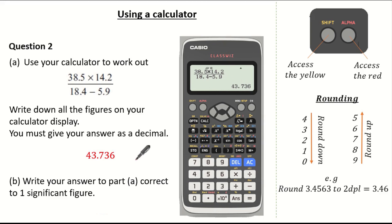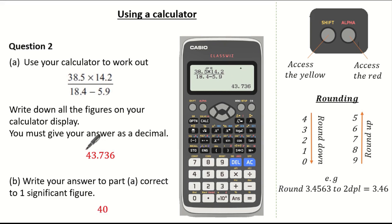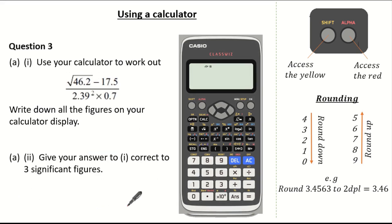Now part B wants us to round our answer correct to one significant figure. So we look at the first digit which is our 4. Remember the digit to the right is a 3. Because it is a 3 we round 43.736 down to 40.